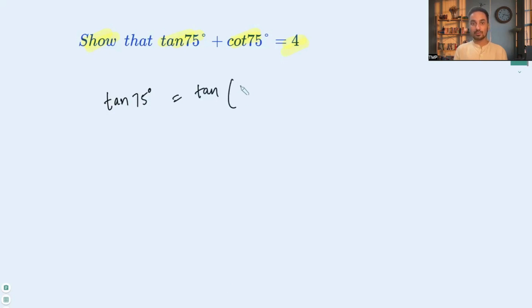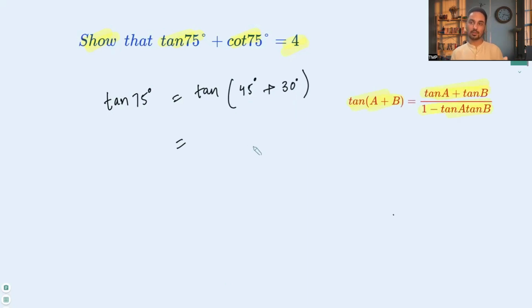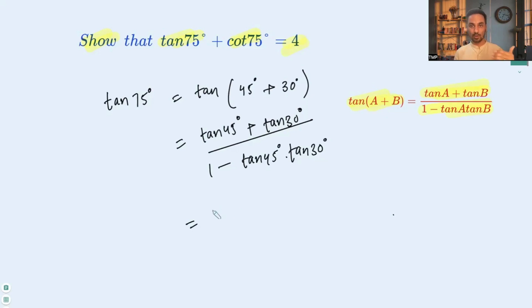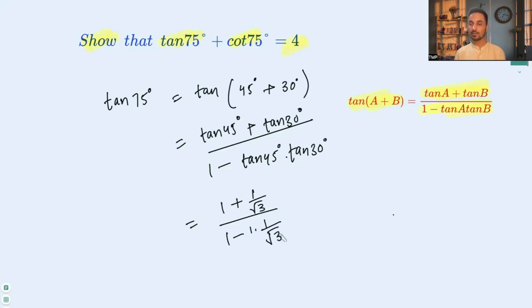Using the compound angle identity tan(A + B) = (tan A + tan B) / (1 − tan A·tan B), and replacing A with 45° and B with 30°, we get: (tan 45° + tan 30°) / (1 − tan 45°·tan 30°). We know tan 45° = 1 and tan 30° = 1/√3, so this becomes (1 + 1/√3) / (1 − 1·(1/√3)).